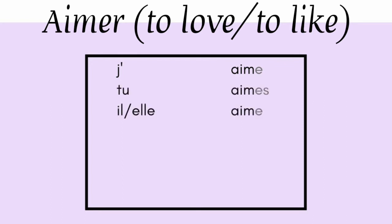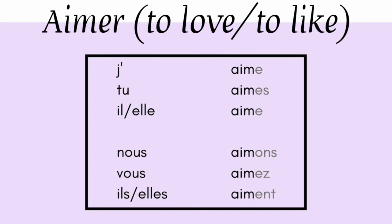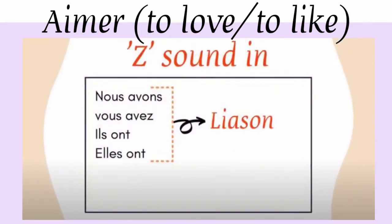So: tu aimes, il aime, elle aime. You might ask why there is no apostrophe with il and elle — the apostrophe is added only with j', not with any other subject. Nous aimons, vous aimez, ils aiment, elles aiment. As you can hear: nous aimons, vous aimez — there is a liaison sound because the word starts with a vowel. We already covered this with avoir.